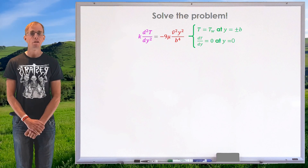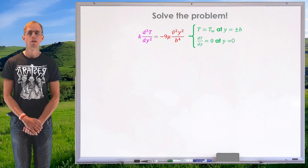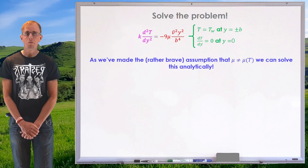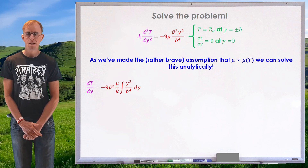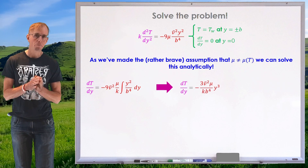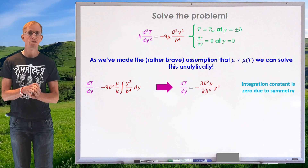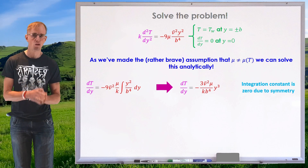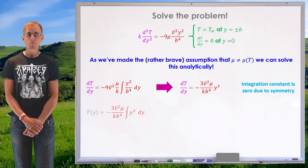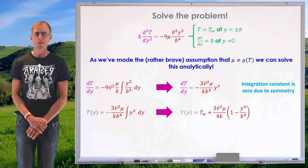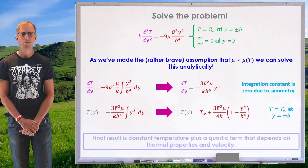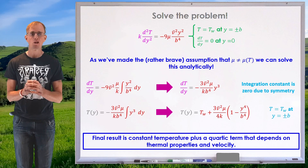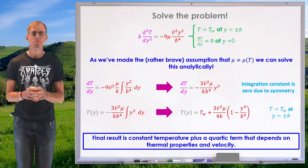There's the equation I'm solving and those are the boundary conditions. It's a simple analytical solution so let's integrate. The temperature gradient with respect to y follows from the first integral, and because of our axis placement the integration constant is zero. Integrating once again gives the temperature field: a combination of a constant wall temperature plus a term that is quartic in position y and also dependent on the square of the velocity.